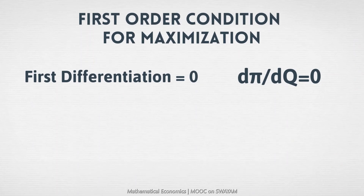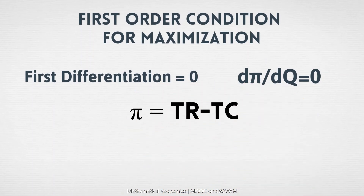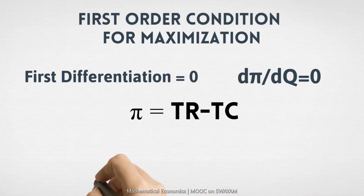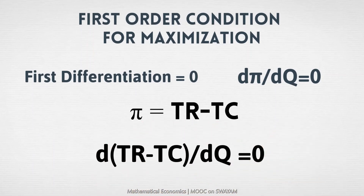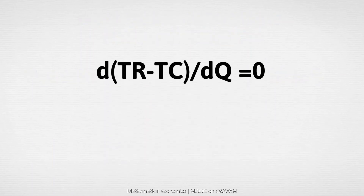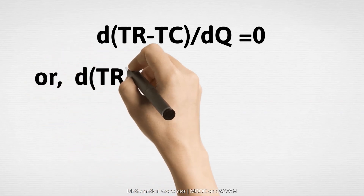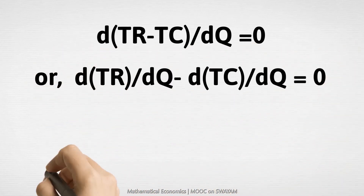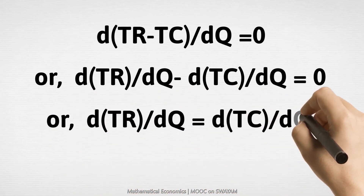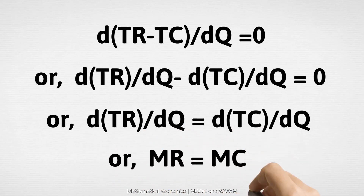Therefore, the first order condition for maximizing profit will require d(PI)/dQ = 0, since PI is the function that is to be maximized. Now PI = TR - TC. Therefore, we have d/dQ of (TR - TC) = 0, which gives d/dQ of TR = d/dQ of TC, or MR = MC.